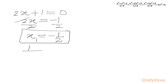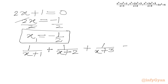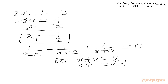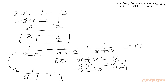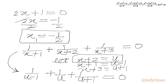Now we consider the second equation: 1/(x+1) + 1/(x+2) + 1/(x+3) = 0. To solve this we use substitution. Let x+2 = u, so x+1 = u−1 and x+3 = u+1. Our equation in u becomes 1/(u−1) + 1/u + 1/(u+1) = 0.